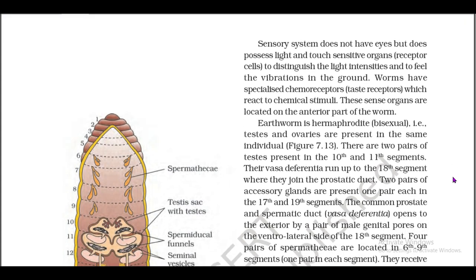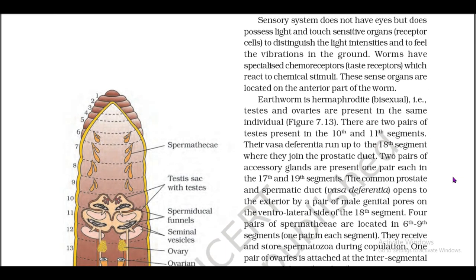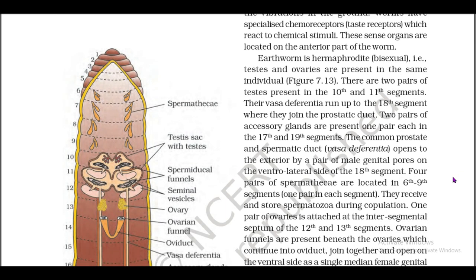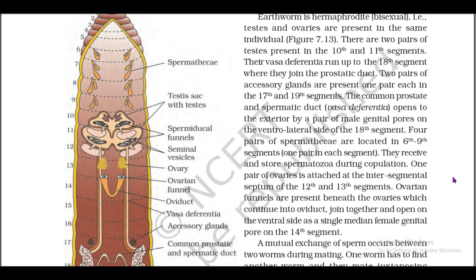These sense organs are located on the anterior part of the worm. Earthworm is hermaphrodite (bisexual), meaning testes and ovaries are present in the same individual (figure 7.13). There are two pairs of testes present in the 10th and 11th segments. The vas deferens runs up to the 18th segment where it joins the prostatic duct. Two pairs of accessory glands are present, one pair each in the 17th and 19th segments. The common prostate and spermatic duct (vas deferens) opens to the exterior by a pair of male genital pores on the ventrolateral side of the 18th segment.